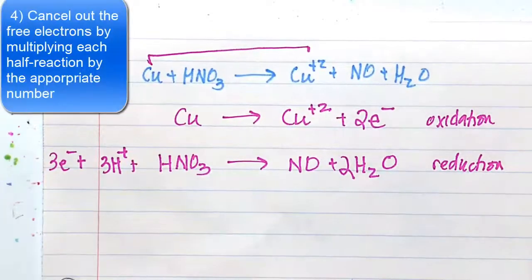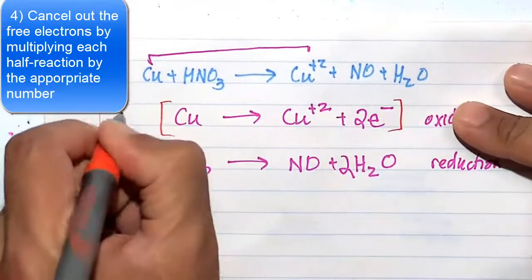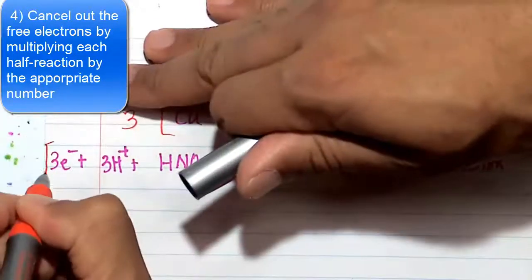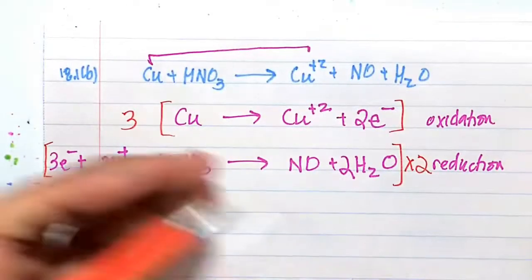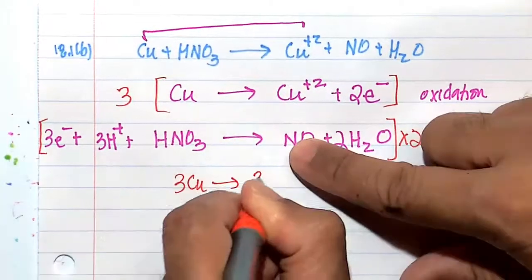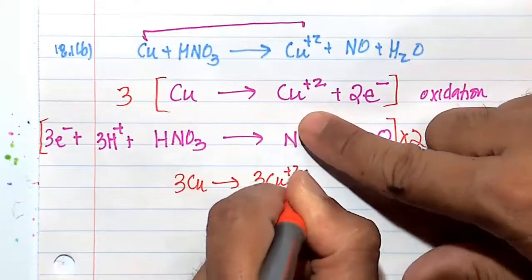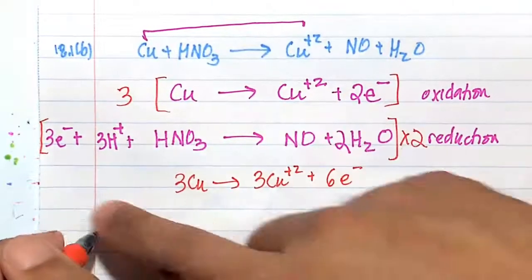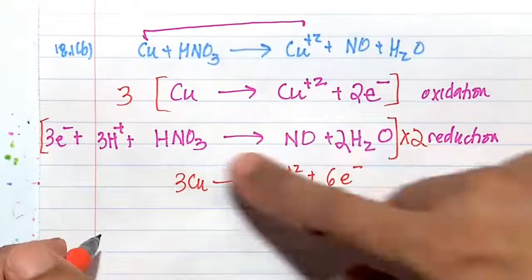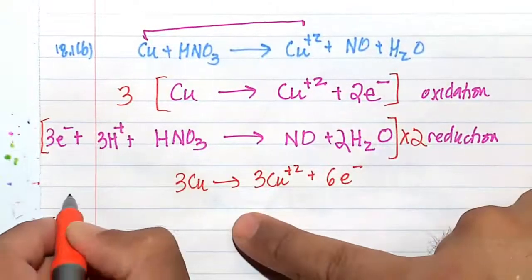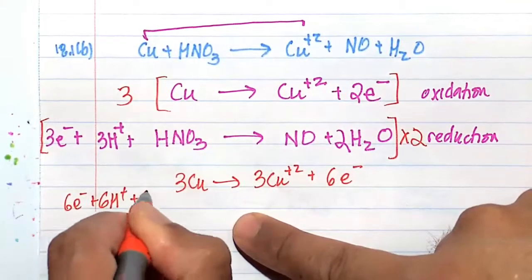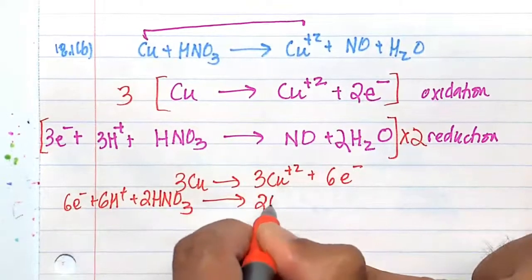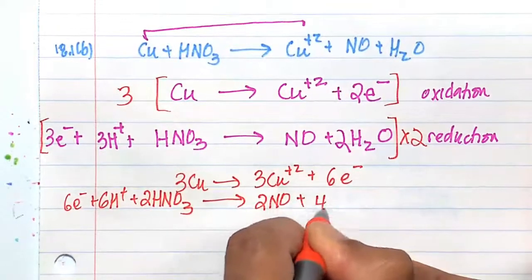Now we'll cancel out the electrons. In order to cancel out the electrons, we will multiply the first half reaction by 3, and then multiply the second half reaction by 2. Multiplying this whole thing out by 3, we have 3Cu goes to 3Cu²⁺ plus 6e⁻. Multiplying this out by 2, we have 6e⁻ plus 6H⁺ plus 2HNO₃, and that's going to give us 2NO plus 4H₂O.